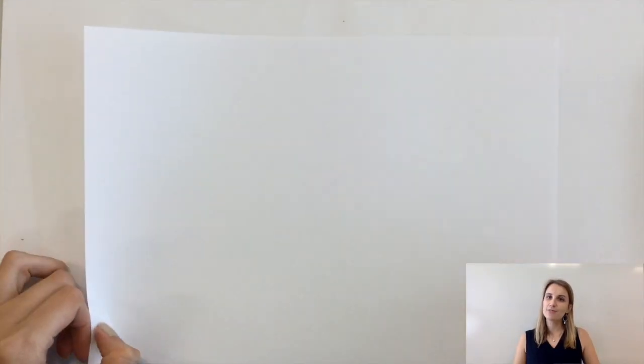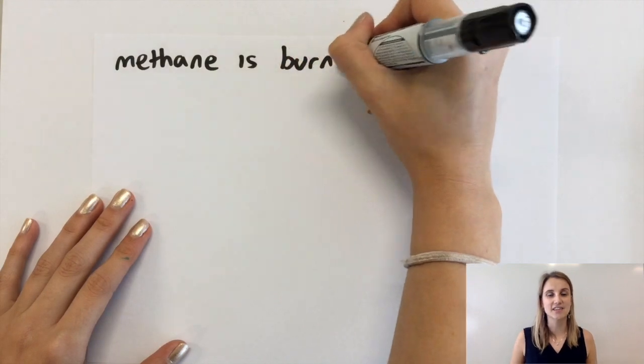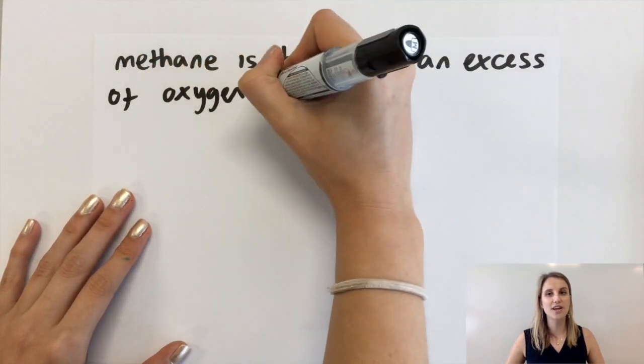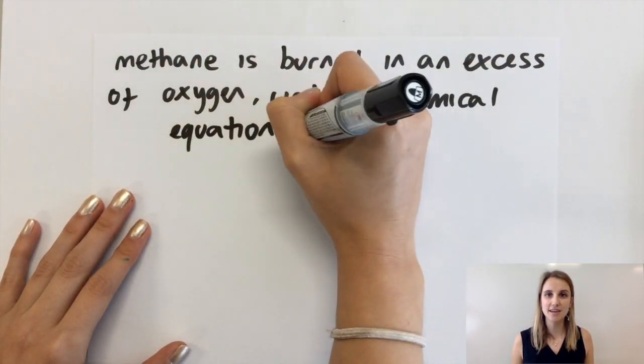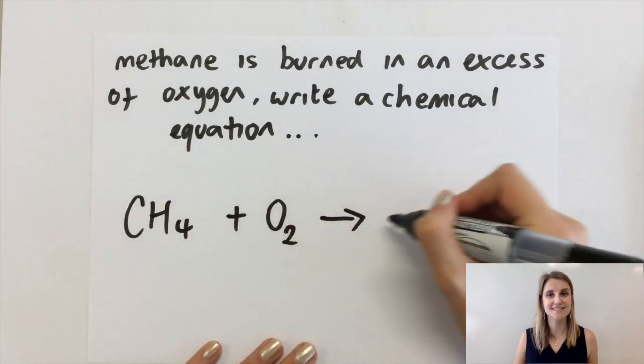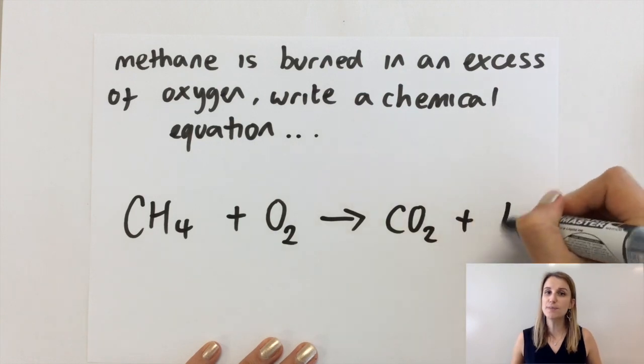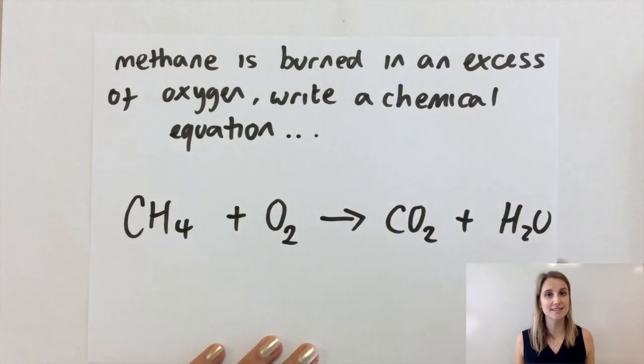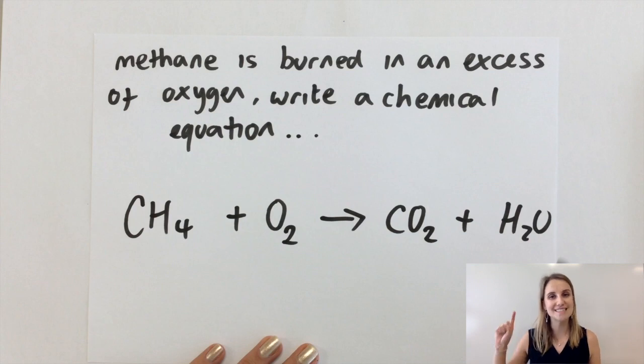If I have methane being burned in an excess of oxygen let's write the equation for that. So methane is meth and an alkane so that means it has one carbon and it's CH4. It must be reacting with oxygen because it's always burned in oxygen and the products are always CO2 and water. So this is the base of my equation here.